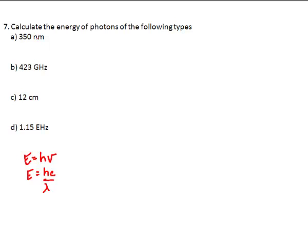The next thing you're going to want to do is convert your units. So, this is 350 times E to the negative 9th. This is 423 E to the 9th. This is 12 E to the negative 2nd. And 1.15 E to the 18th.